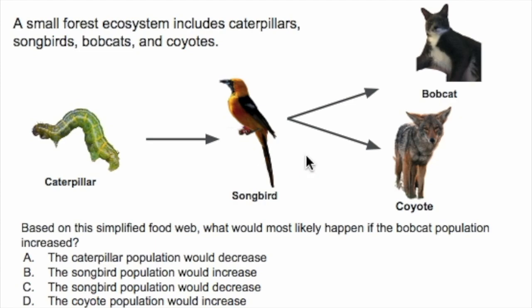The second thing is: if the bobcat population increases, there are more of them, so they're going to eat more songbirds. And if songbirds eat caterpillars but we now have fewer songbirds, the caterpillar population is not going to decrease — if anything, it's going to increase because there are fewer songbirds to prey on the caterpillars. So answer choice A is incorrect.